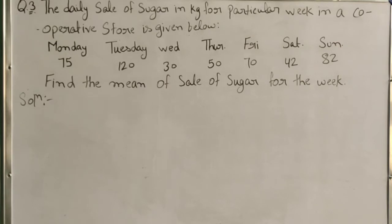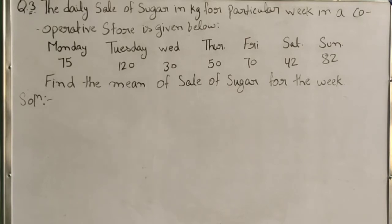Monday is 75, Tuesday is 120, Wednesday is 30, Thursday is 50, Friday is 70, Saturday is 42, and Sunday is 82. Find the mean of sale of sugar for the week.